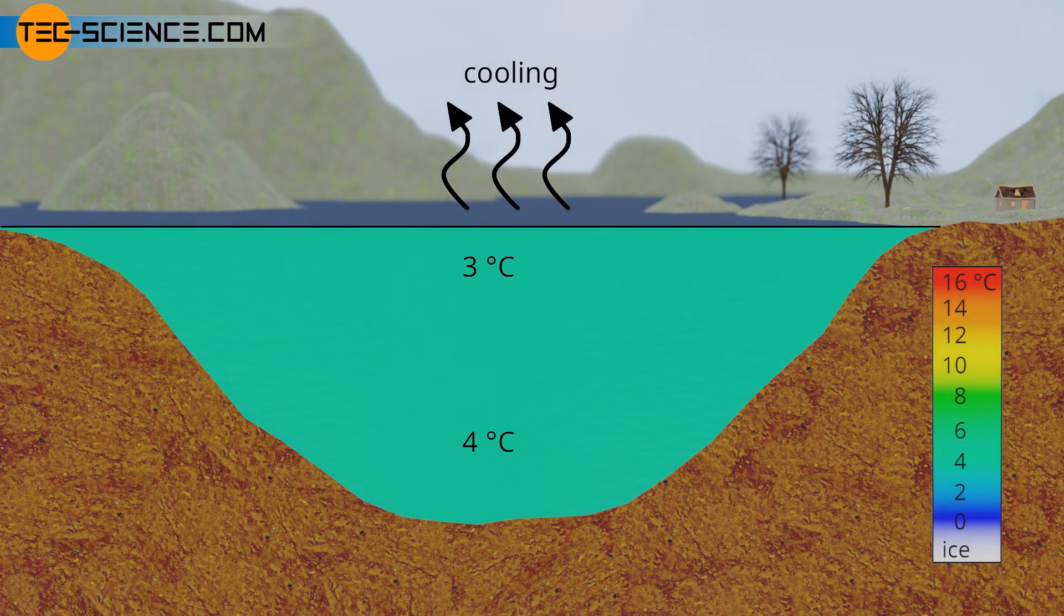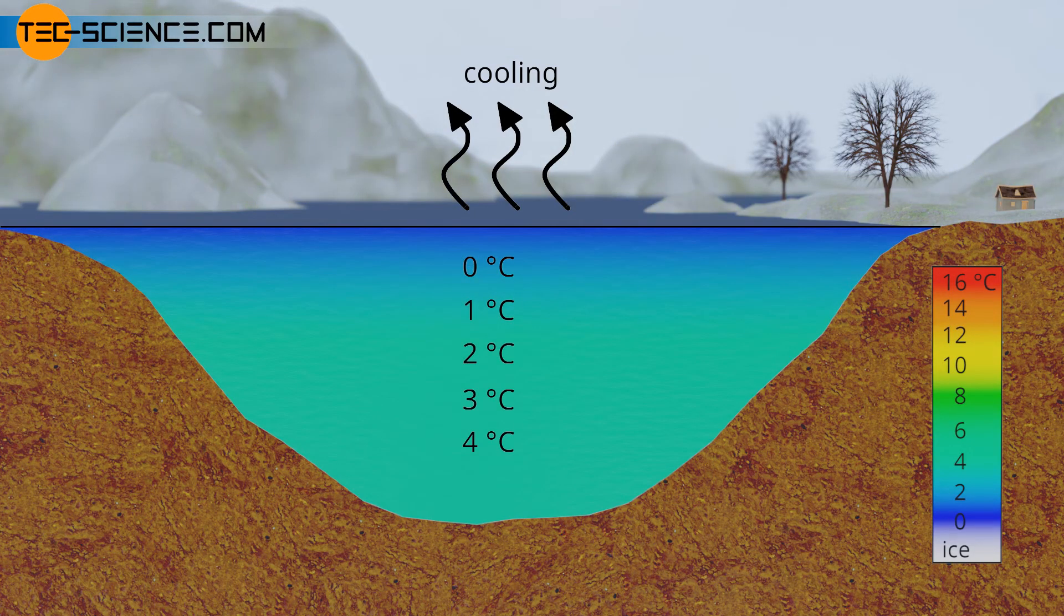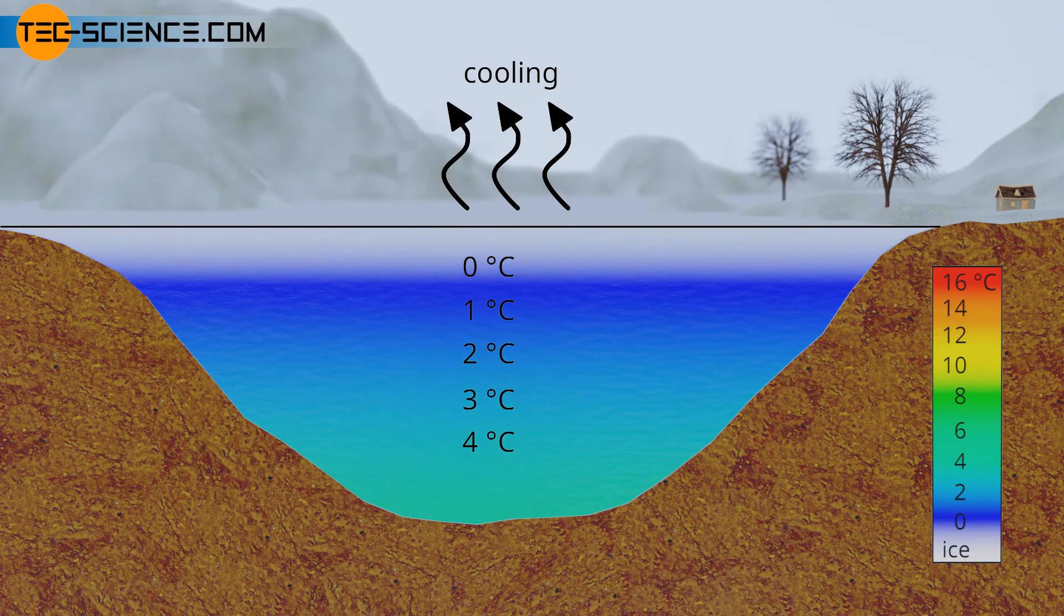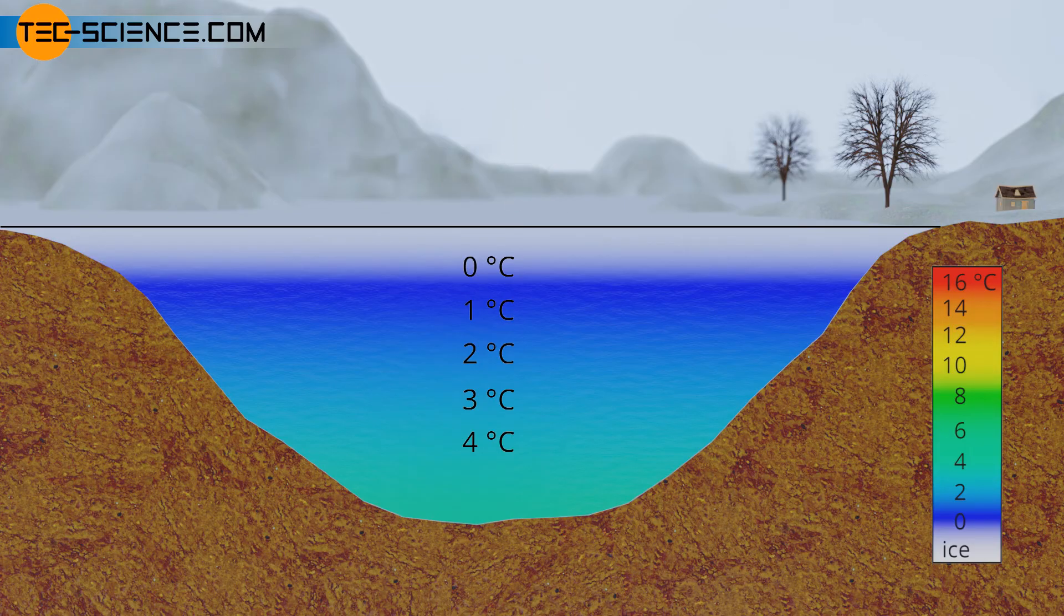As a result, the warmer and therefore heavier layers of water will no longer accumulate on the water surface in winter as in summer, but rather the colder and therefore lighter layers of water will be at the surface. Finally, the solidification temperature of 0 degrees Celsius is reached first on the water surface. For this reason, ice always begins to form first on the surface of a lake.